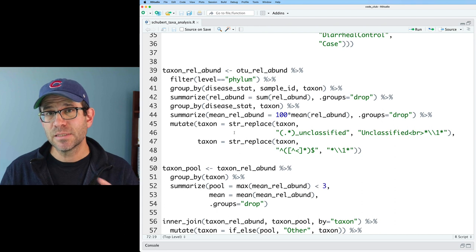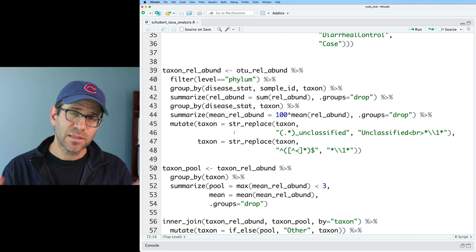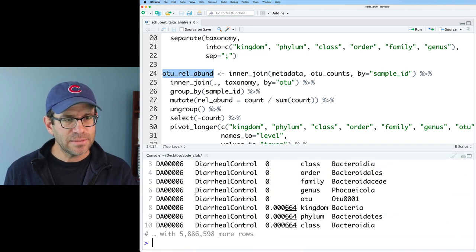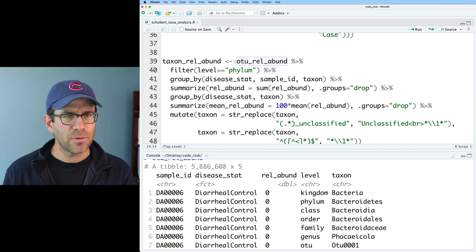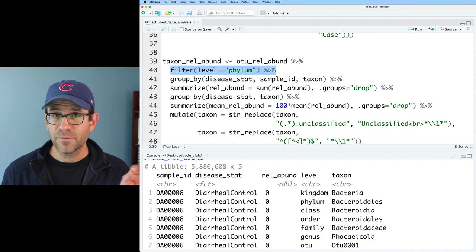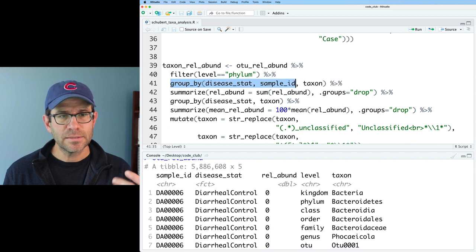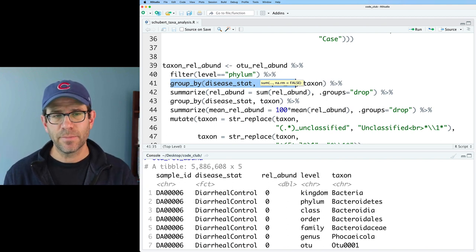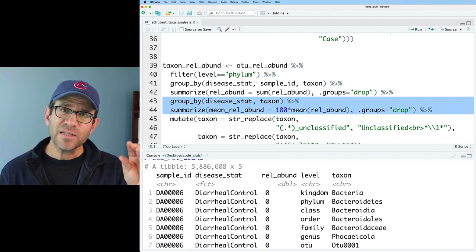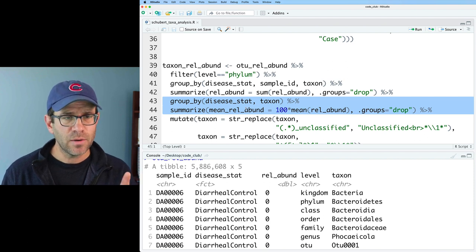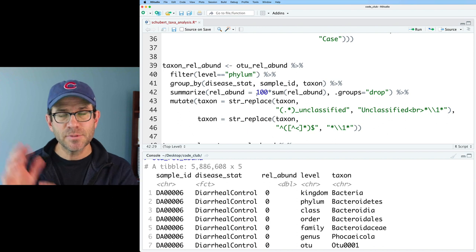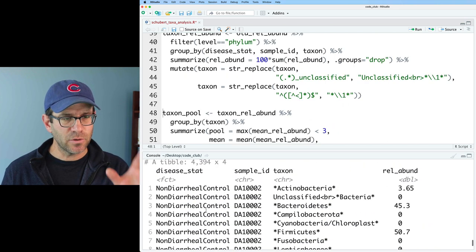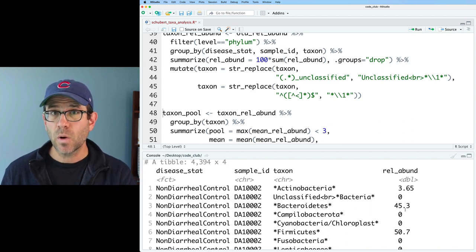So the first thing that we need to do is break apart the data so that we're not aggregating things together by disease status, but that we're keeping things separate at the subject level. We've done this before in a previous episode. But just to remind ourselves, if we look at OTU-RELA-BUND, that does keep the subject sample ID. Now down here in taxon-RELA-BUND, we go ahead and we group, we filter at the phylum level to pull out the phylum information. We then group by disease stat, sample ID, and taxon. And then we group things together, group OTUs together that are from the same phylum. And then down here in lines 43 and 44, that's where we aggregated across the disease status groups. So I'm going to go ahead and remove those two lines, but I'm going to add back in the 100 times my sum-RELA-BUND so that I can report my relative abundance as a percentage. Let's go ahead and run taxon-RELA-BUND. And we see that we have our disease status group, our sample ID, the taxa, the phylum that it's coming from, as well as the relative abundance.